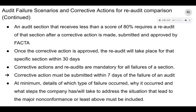Continuing with more failed scenarios and corrective actions for re-audit: an audit section receiving less than a score of 80% requires a re-audit of that section after a corrective action is made, submitted, and approved by the company. Once the corrective action is approved, the re-audit will take place for that specific section within 30 days. Corrective actions and re-audits are mandatory for all failures of a section. Corrective action must be submitted within seven days of the failure of an audit. At minimum, details of which type of failure occurred, why it occurred, and what steps the company has or will take to address the situation must be included.